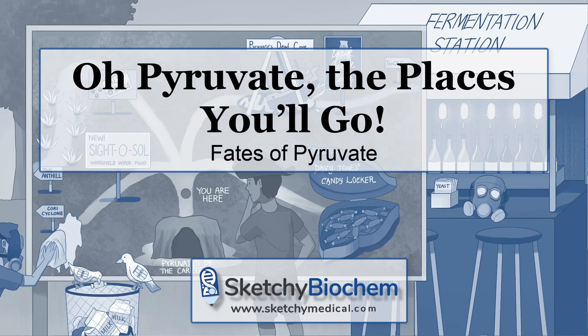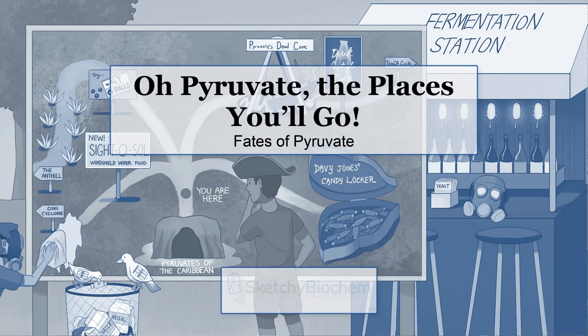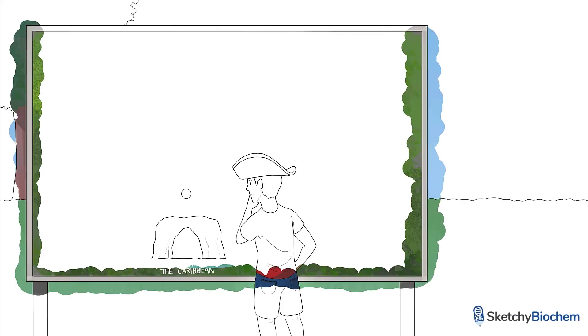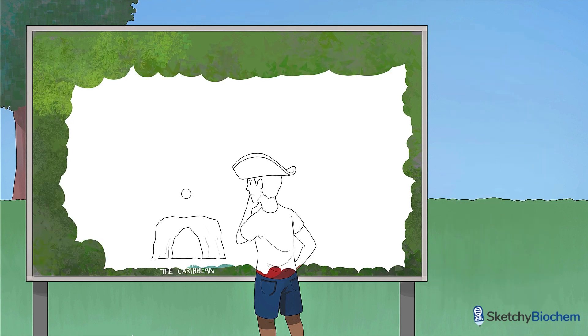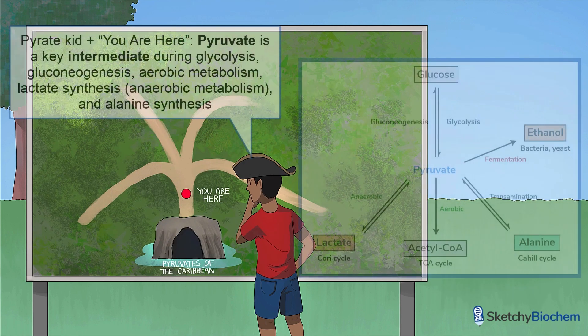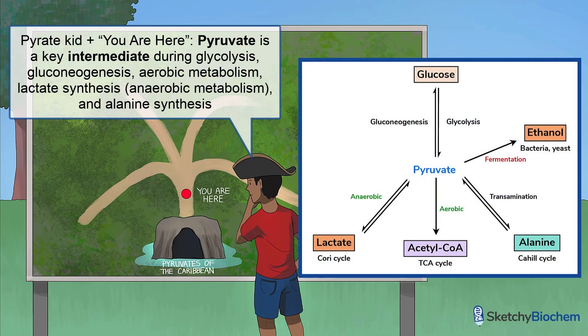Welcome back to Sketchyland. I don't know about you, but if I see another robot pirate, I'm probably going to land in Sketchy Jail for destruction of private property. Anyways, we've entitled the sketch 'Oh Pyruvate, the Places You'll Go,' because pyruvate can enter many different pathways. Let's discuss the fates of pyruvate. Just to recap, this kid wearing a pirate hat is pyruvate — he just exited Pyruvates of the Caribbean and has absolutely no clue where to go next.